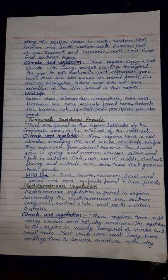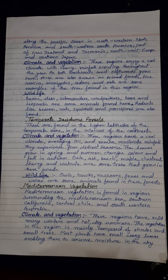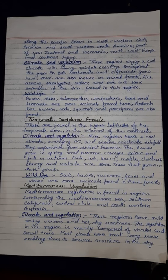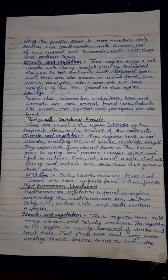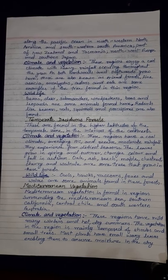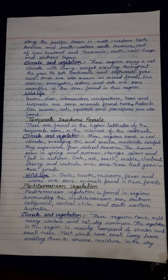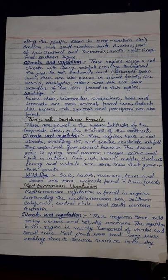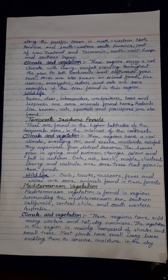Mediterranean vegetation is found in regions surrounding the Mediterranean Sea, southern California, central Chile, and southwestern Australia. These regions have mild rainy winters and hot dry summers. The vegetation is mainly composed of shrubs and small trees. Most plants have small waxy leaves enabling them to conserve moisture in the dry summer.